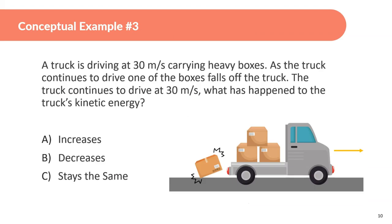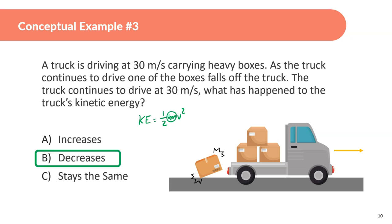Conceptual example: A truck drives at 30 m/s carrying heavy boxes. One box falls off, but the truck continues at 30 m/s. Since KE = ½mv², the velocity stays the same but the mass decreases, so the truck now has less kinetic energy.